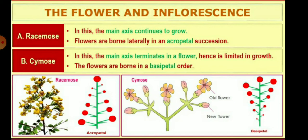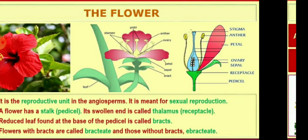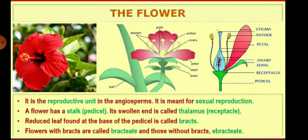In this diagram you can see the acropetal and the basipetal also. The reproductive unit in the angiosperm is the flower. It is meant for sexual reproduction. The flower has a pedicel, and the swollen end is called the thalamus part. The reduced leaf found at the base of the pedicel is called the bract.